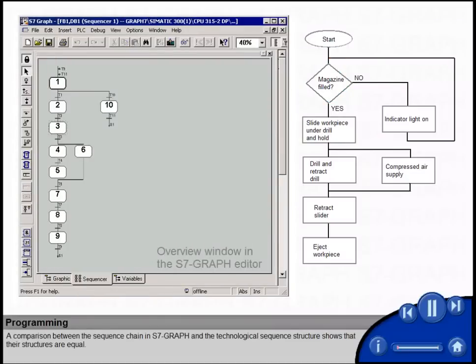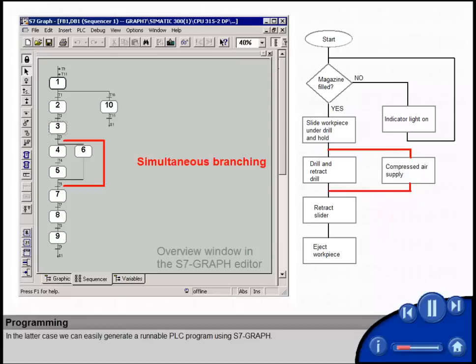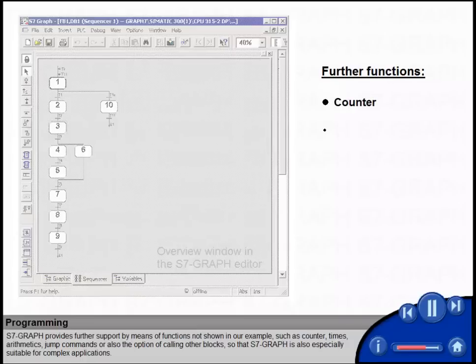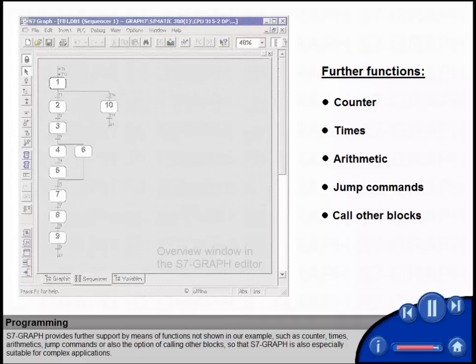A comparison between the sequence chain in S7-GRAPH and the technological sequence structure shows that their structures are equal. In the latter case, we can easily generate a runnable PLC program using S7-GRAPH. S7-GRAPH provides further support by means of functions not shown in our example, such as counter, times, arithmetics, jump commands or also the option of calling other blocks so that S7-GRAPH is also especially suitable for complex applications.